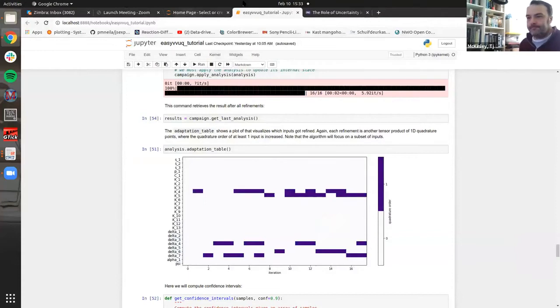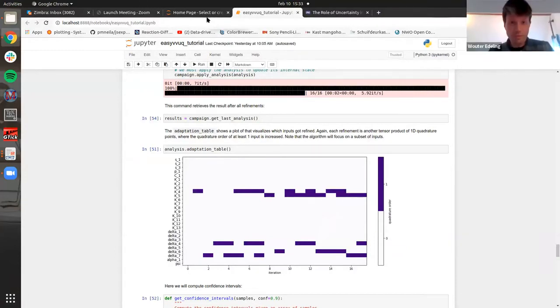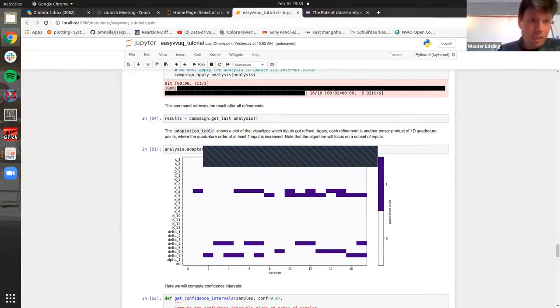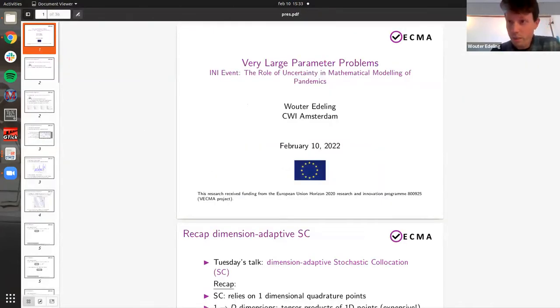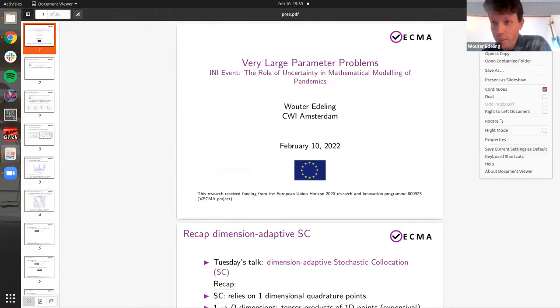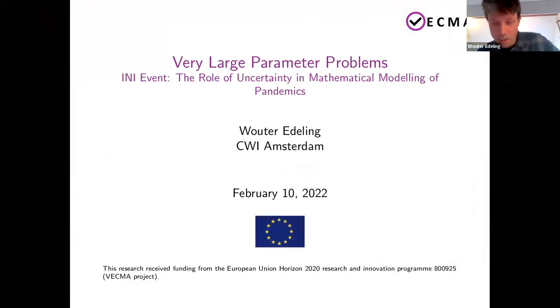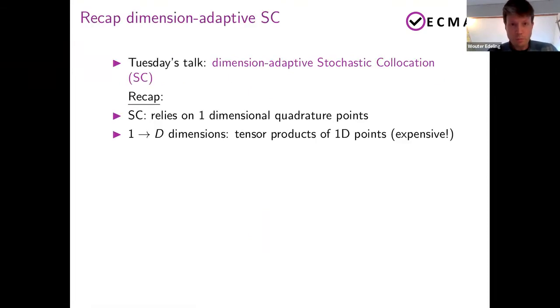Edeling from CWI in Amsterdam, and he's going to be talking to us today about very large parameter problems. Walter, if you're there, I will pass over to you. You can see my screen and hear me, I suppose. Yes, we can. Okay, good. Let me just make this large. Yes. Okay, so thank you again for having me. I'm going to be talking about a forward UQ problem. So we're not calibrating, we're just propagating uncertainty forward through the model. And if you were present at Tuesday's talk, I was just talking about stochastic collocation and an adaptive version of it.